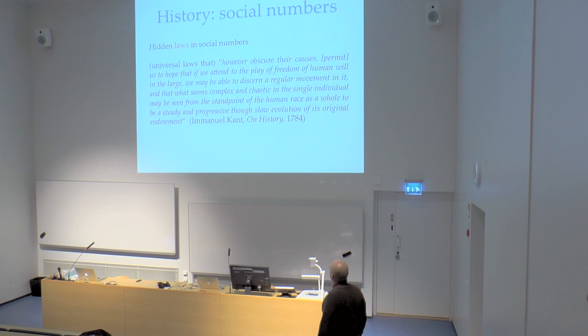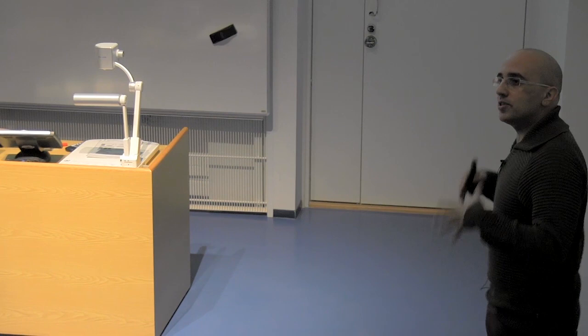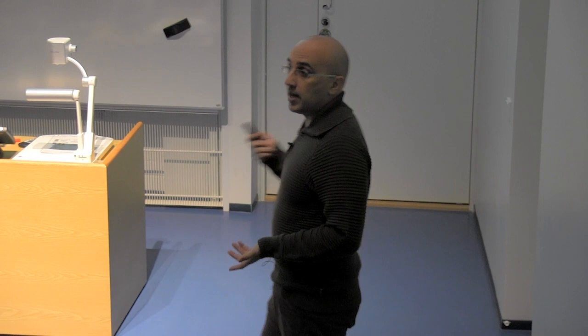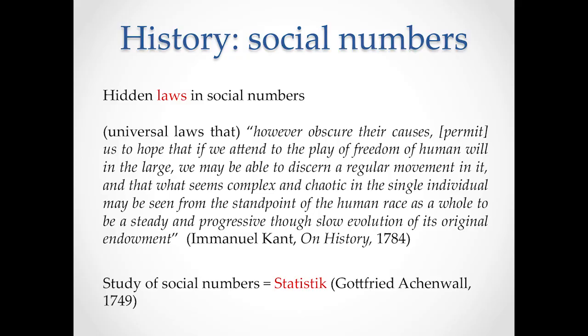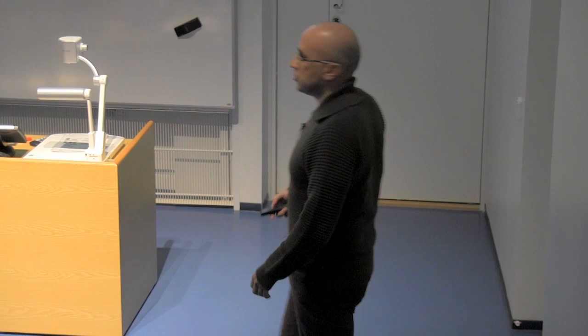Already Kant, in his essay on history in 1784, appealed to universal laws that, however obscure their causes, permit us to hope that if we attend to the play of freedom of human will in the large, we may discern a regular movement in it — that what seems complex and chaotic in the single individual may be seen from the standpoint of the human race as a whole to be a steady and progressive evolution. Gottfried Achenwald created the term 'statistic' — the study of social states — and it's a German word.